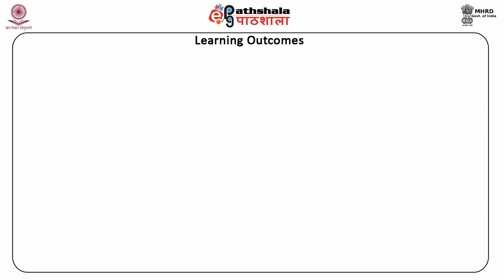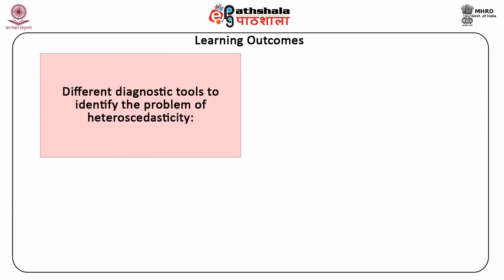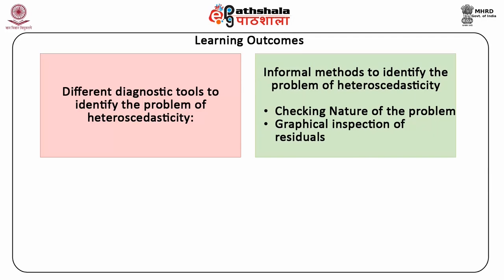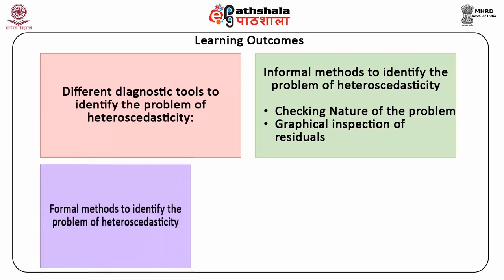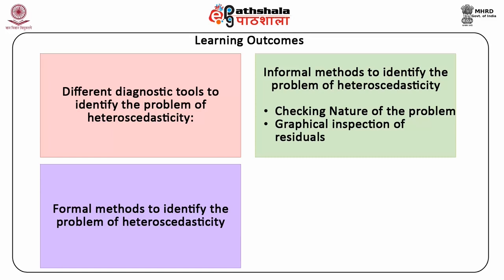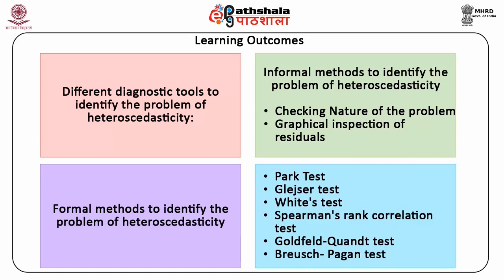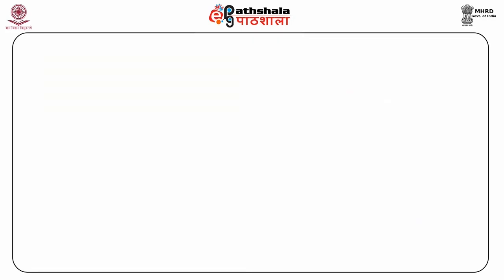After studying this module, we shall be able to understand different diagnostic tools to detect the problem of heteroscedasticity: the informal methods to identify the problem, which are checking the nature of the problem and the graphical inspection of residuals; and the formal methods to check for heteroscedasticity, such as the Park test, White's test, Spearman's rank correlation test, Breusch-Pagan test, etc.